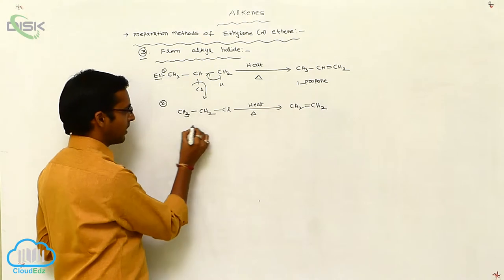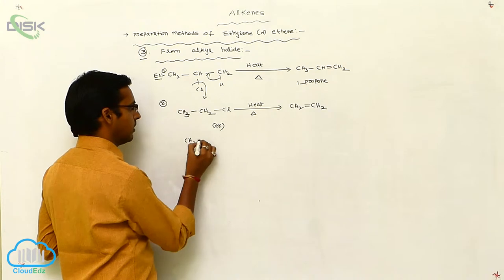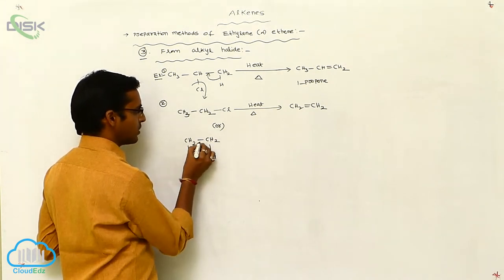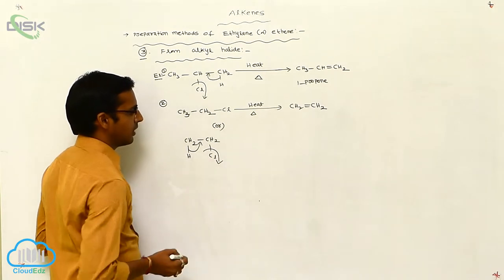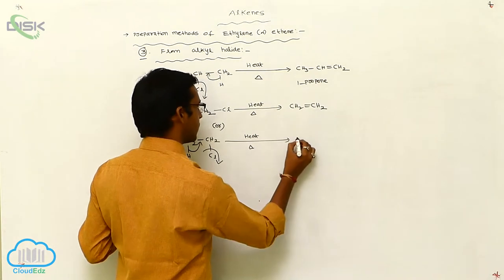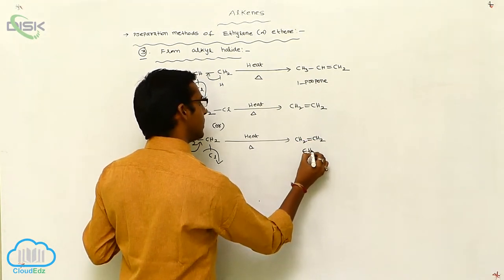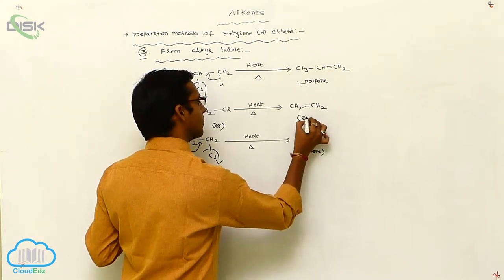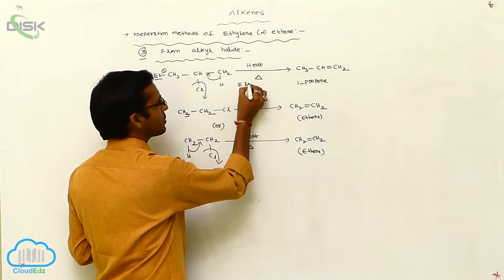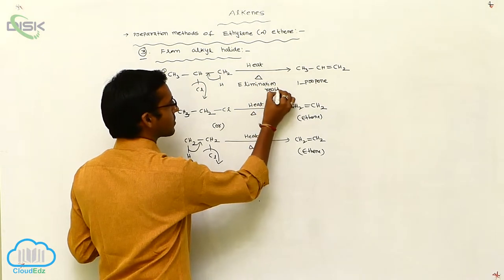This sigma bond is shifted and Cl is eliminated. So in the presence of E2, under thermal conditions, it gives CH2 double bond CH2. This is ethene — also the same product. This is the elimination reaction.